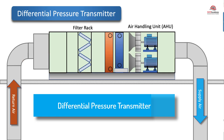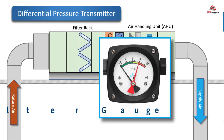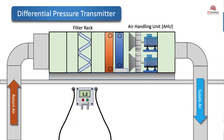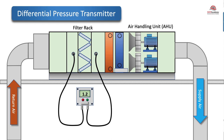Differential pressure transmitter for dirty filters. Differential pressure is used to indicate when filters have become dirty. When the filters are clean, there is less pressure drop across them. As dirt becomes trapped on the filter media, the pressure drop across the filter increases, which increases the differential pressure. By putting a differential pressure transmitter in place, an alert can be sent to facility personnel to change the filters. Increased pressure drop across the filter causes an increase in fan energy and utility cost.